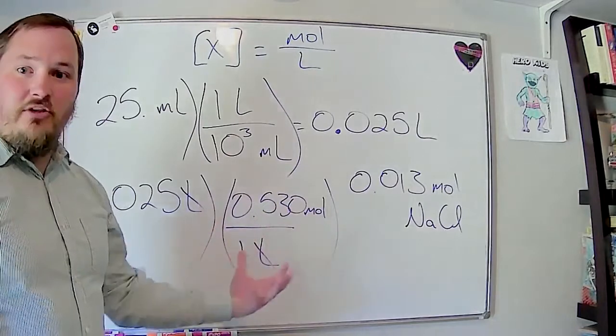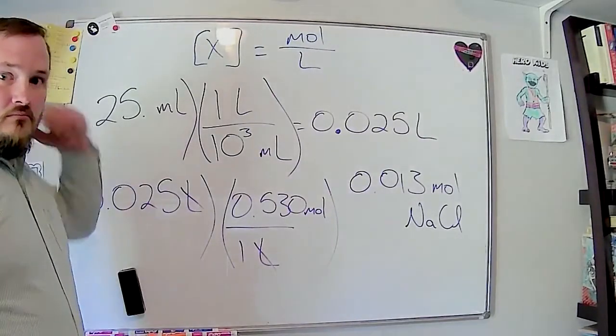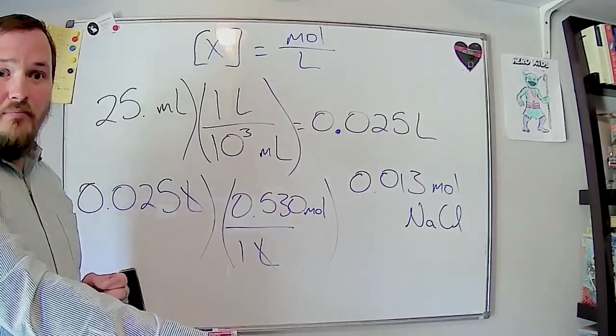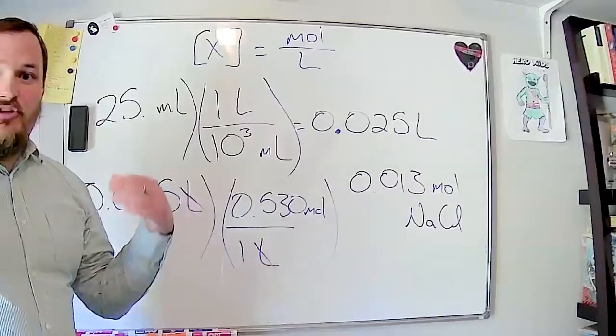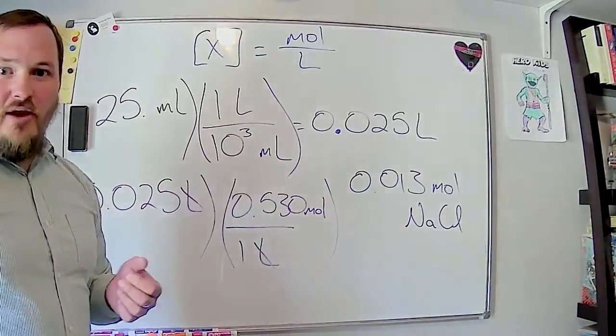A student mentions struggling with a homework problem involving rubbing alcohol being 60% carbon. The instructor confirms this ties to the current concept — percentages are another way of writing a concentration, basically out of 100. For every 100 grams of compound, you get a certain number of grams of each element.